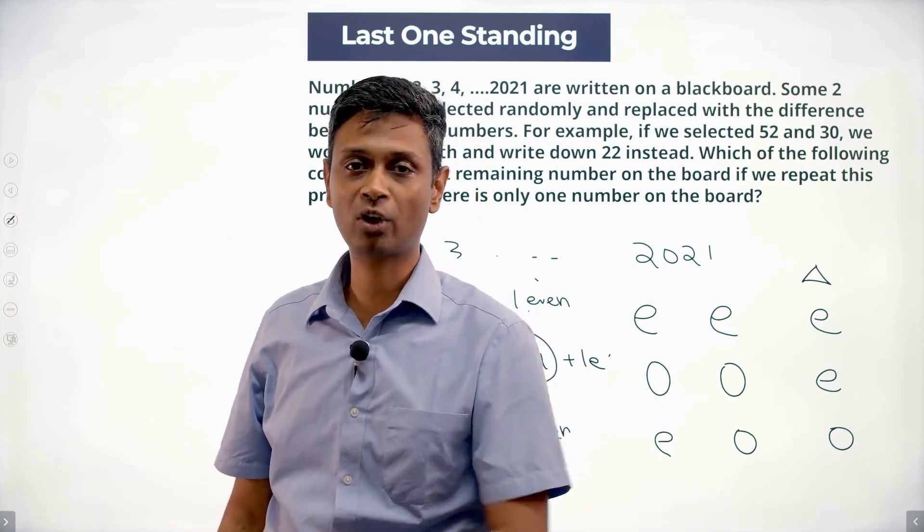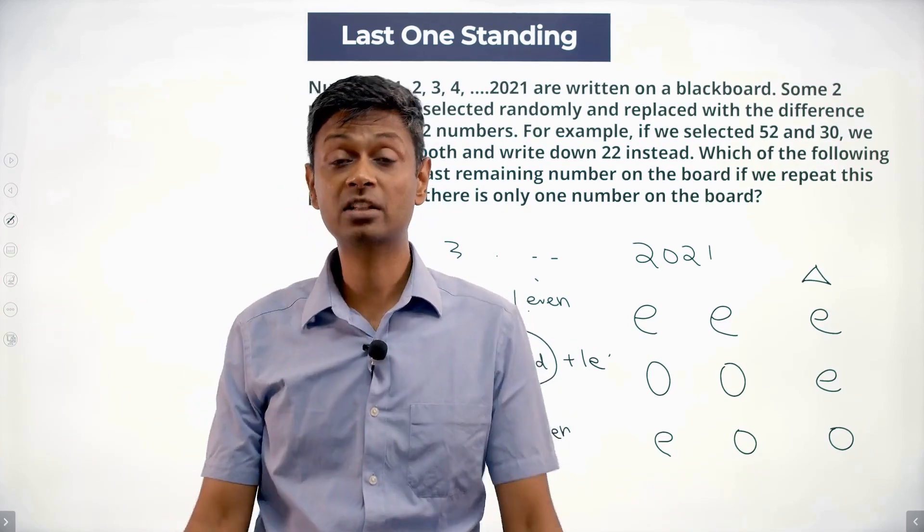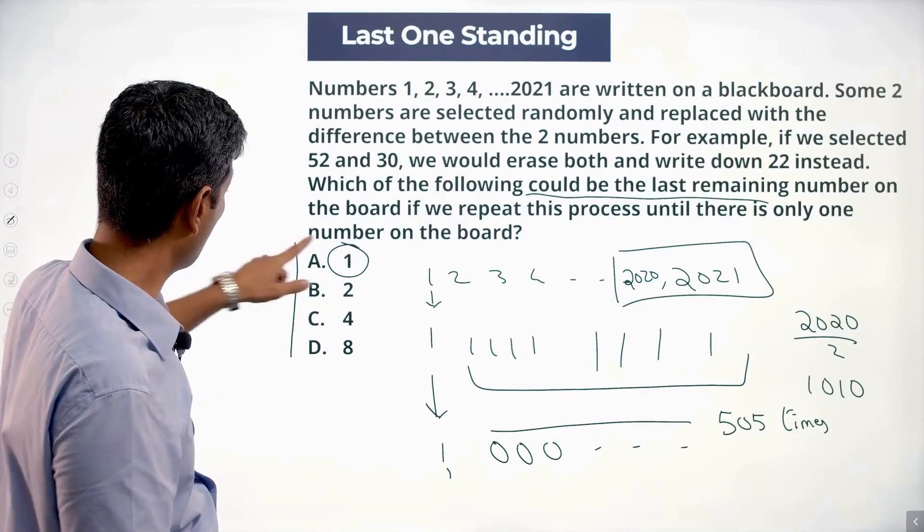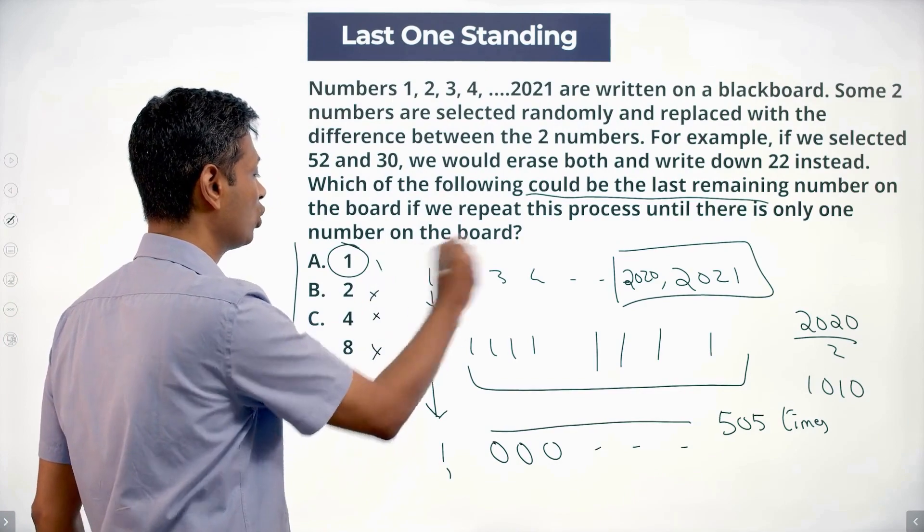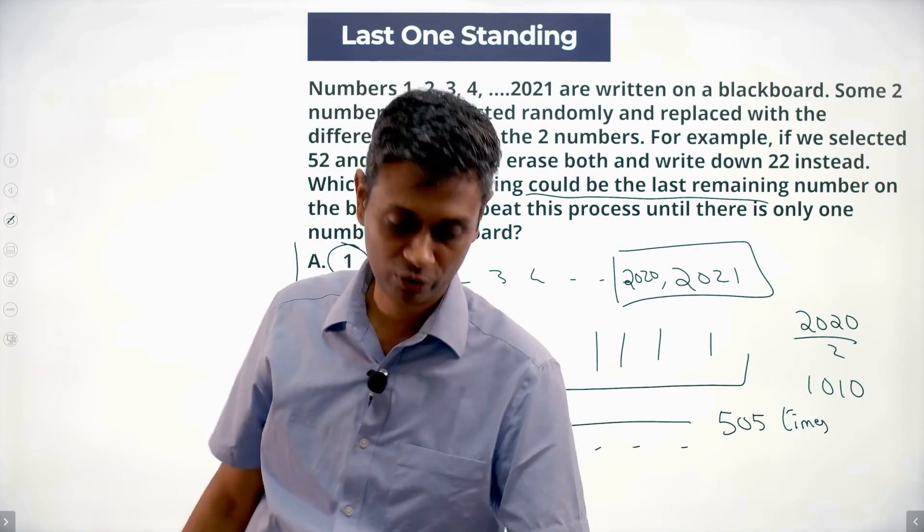Or my last number has to be an odd number. In the end, however, whatever sequence I do it in, my last number has to be an odd number. If you look at the choices, I have 1, 2, 4, 8. Even number, even number, even number. Only one odd number. My last number has to be an odd number. That is the one I'm looking for.